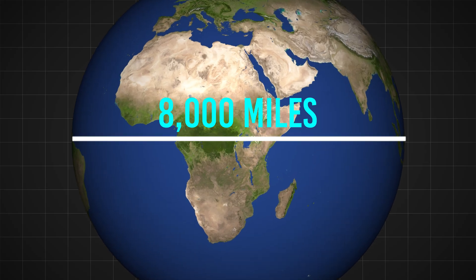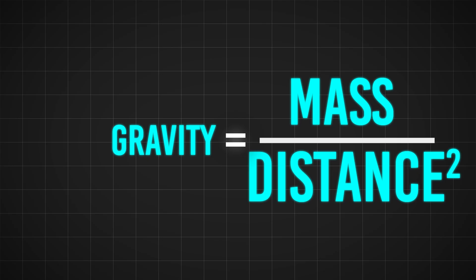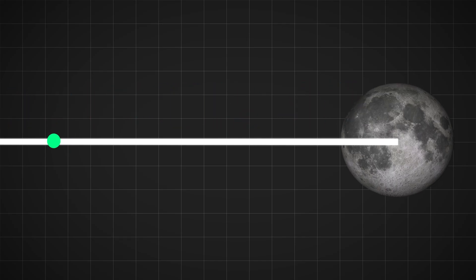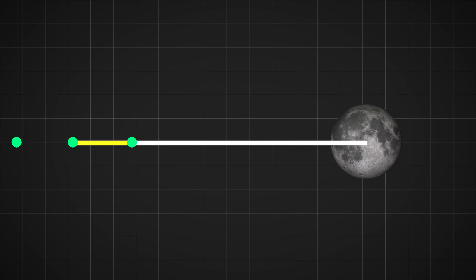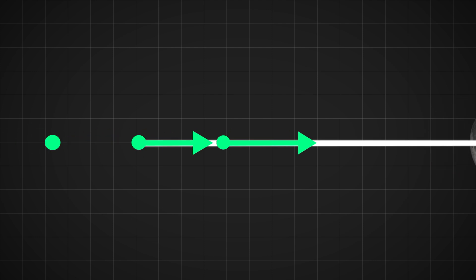The earth is kind of big — over 8,000 miles across. And remember, gravity weakens with distance. So if we look at the earth and moon like this, we see that the moon's gravity on earth will be different at different points on earth. To simplify, let's replace the earth with three simple dots. This dot in the middle represents the center of earth and is about 240,000 miles away from the moon. But this dot is closer to the moon by about 4,000 miles, so it feels a slightly stronger force of gravity than the center dot does. And this dot feels a weaker force of gravity, since it's about 4,000 miles farther than the center dot.